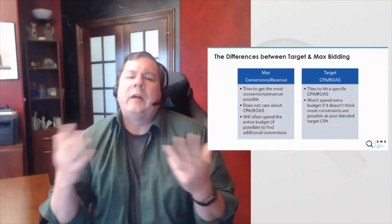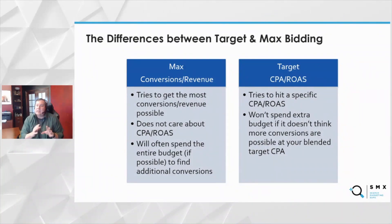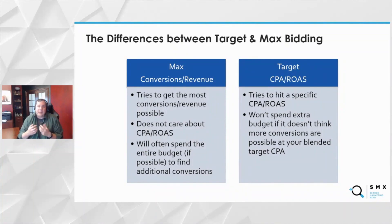At a high level, what's the difference? Max conversions and max revenue tries to get the most conversions or revenue possible. It does not care about CPA or ROAS, and it will often spend the entire budget — no matter what it is — to find additional conversions or revenue. Then we have target CPA or ROAS, which tries to hit a specific CPA or ROAS that you give it. It won't spend extra budget if it doesn't think more conversions are possible, so it looks at a blended CPA or blended ROAS target.